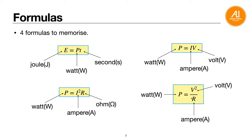They are very similar - it just depends on the question. Take note that the units must be correct before you can use the formula. Current is in ampere, voltage is in volt, power is in watt, and resistance is in ohm - the omega sign. You need these four formulas for the calculations in this topic.